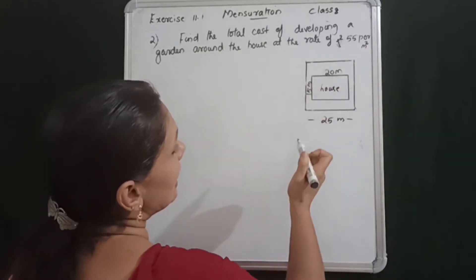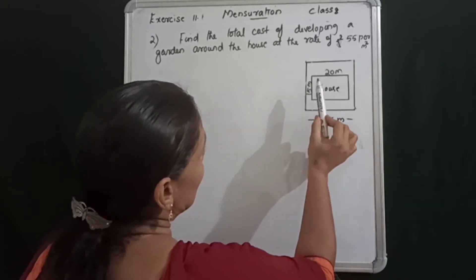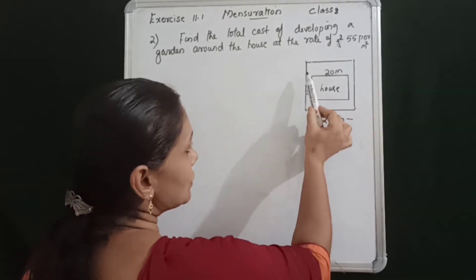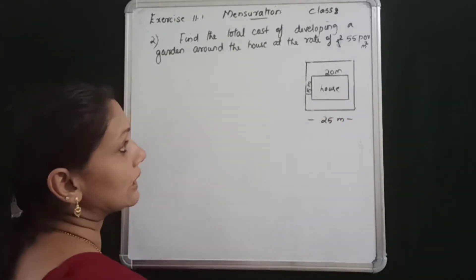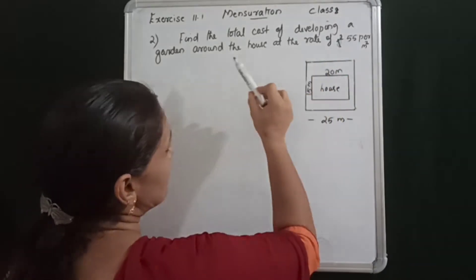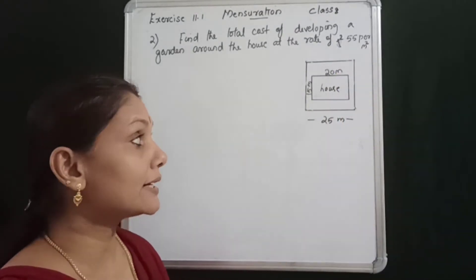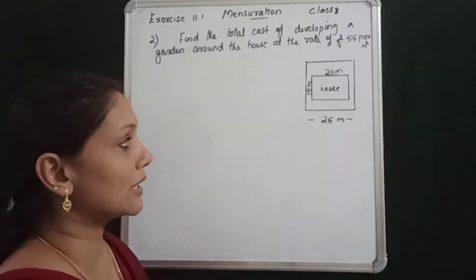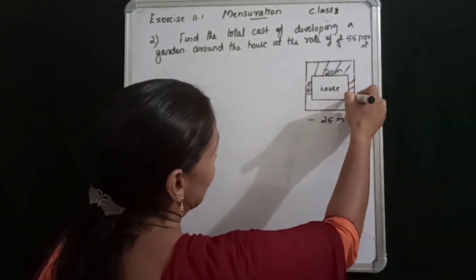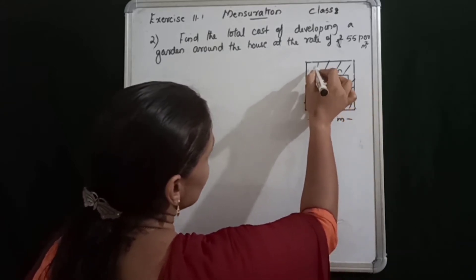The square plot has length 25 meters. The house is 20 meters long and 15 meters wide (breadth). The house is in the garden area. The cost is 55 rupees per meter square. We need to find the total cost, which means we need the total area of the square plot minus the house area.